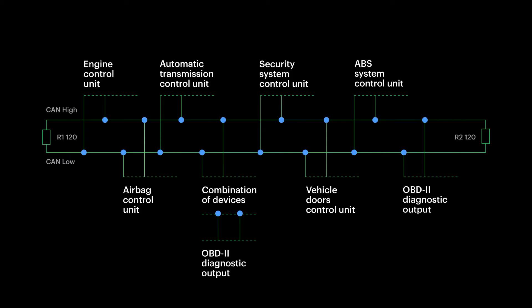Before we start using CAN scanner, I'll tell you how the CAN bus works, what are the ways to connect to it, and show what data we will work with. It's a network of several vehicle nodes or CAN controllers connected by twisted pair. In other words, it is two wires which are called CAN-H high and CAN-L low. All vehicle electronics is connected to them. This is called the CAN bus.